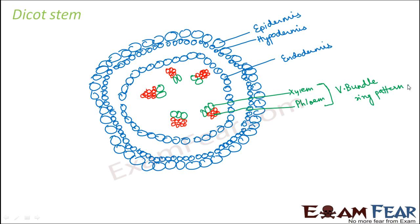Another important thing to notice here is that cambium is present. So what is cambium? Cambium is the meristematic layer of cells between xylem and phloem. Here I am marking it as yellow — this yellow colored layer of cells is nothing but cambium.